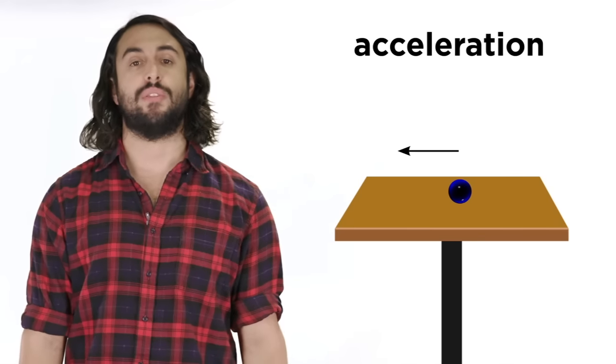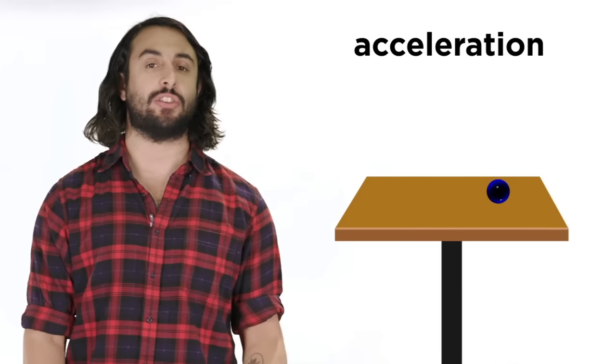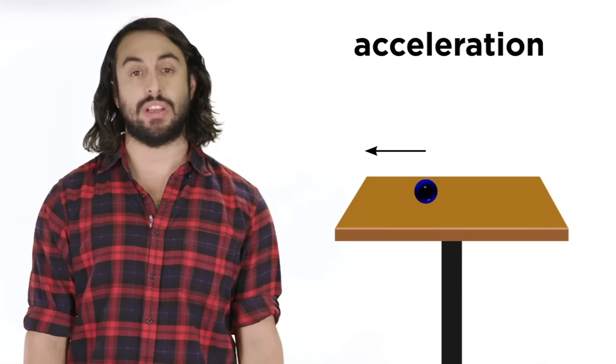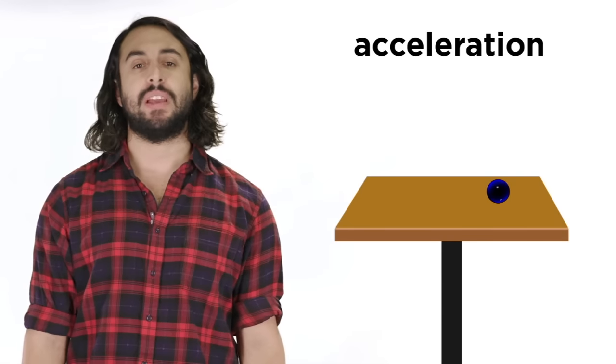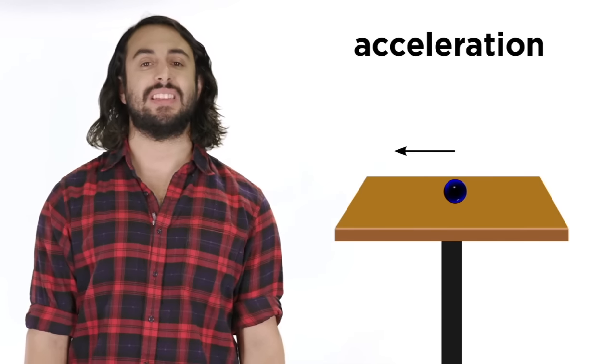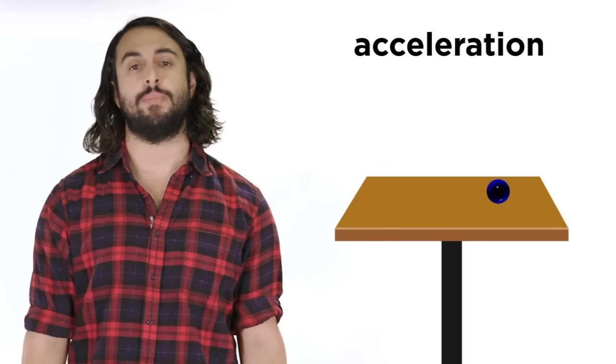And then for acceleration, the vector points in the negative direction, since velocity is decreasing, or becoming smaller per unit time. But it will be constant in magnitude, since this is a constant deceleration due to friction from the surface it's rolling on.